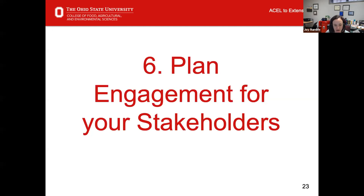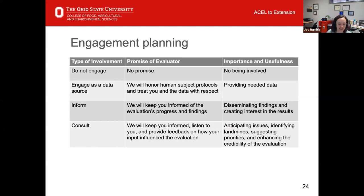Once you've established their roles, you can start to think about planning the engagement for each of your stakeholders. I want you to keep an open mind because sometimes the engagement is things we haven't considered before or things that are maybe not typical to what we're used to. These engagement levels gradually build to higher levels. The first type of engagement for a stakeholder would be do not engage — there's no promise we're going to make to those stakeholders and there's no importance or usefulness to them being involved. This would be that PI for the grant I discussed.